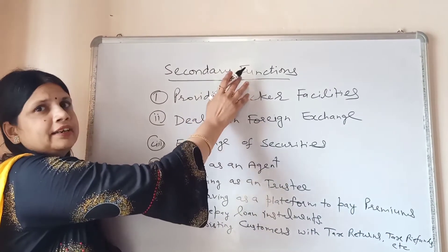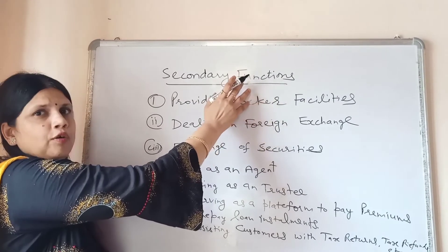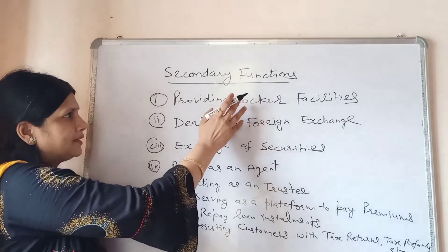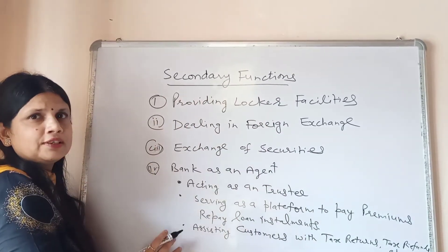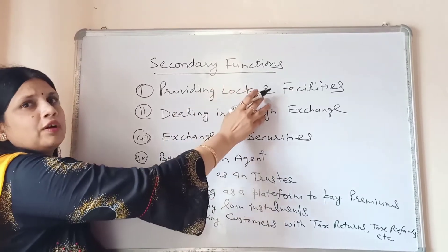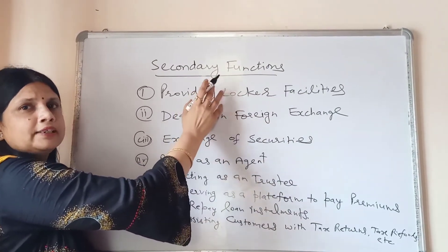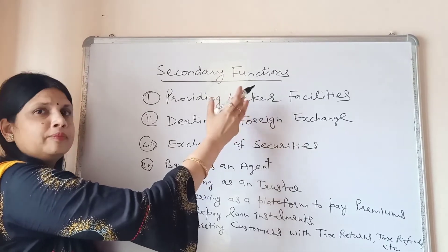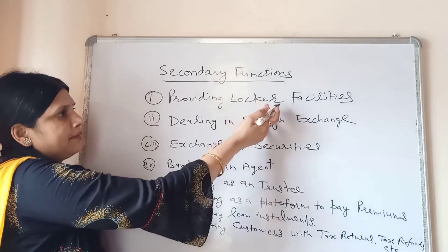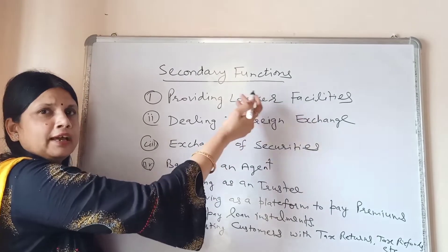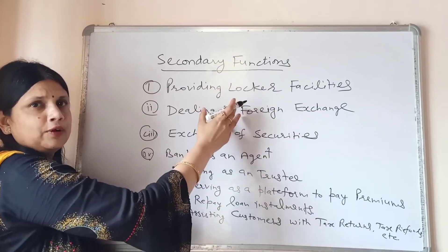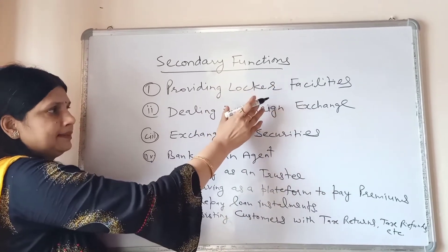The second category is secondary functions. Besides accepting deposits and granting loans, commercial banks also perform secondary functions. One is providing locker facilities — banks provide locker facilities to their customers where you can store gold ornaments, cash, FDs, and other valuables. The bank charges a locker fee for this service.